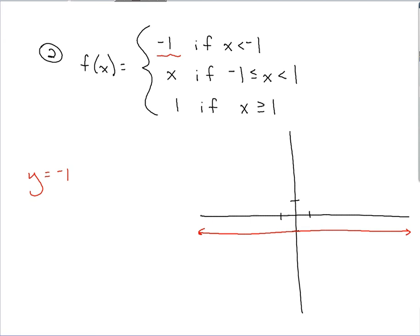Second piece. You're graphing y equals x. So we did that on the previous problem. Got the y-intercept here. Got the slope up 1 over 1. Line passes through both points like so. And on the last piece, we're graphing y equals 1. So also a horizontal line. This time passes through the y-axis at 1. And now we've got a lot going on here.